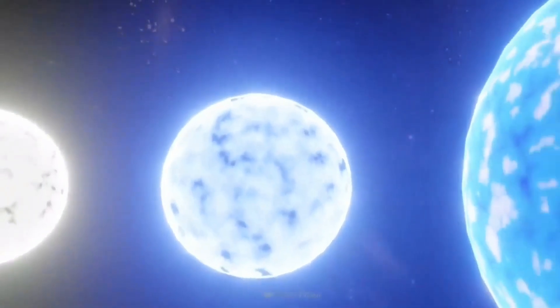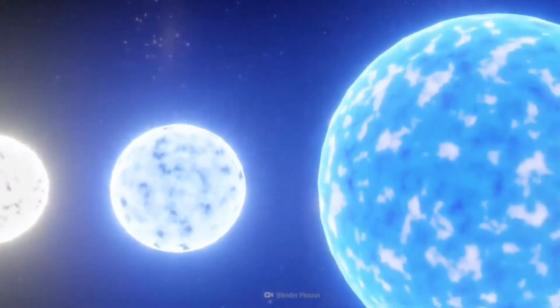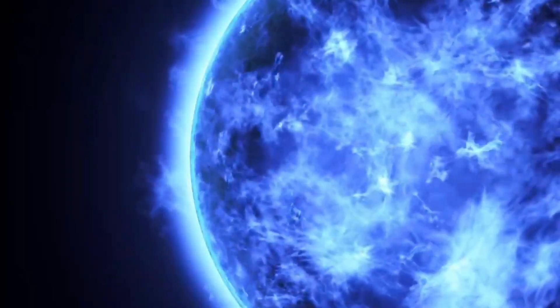The Earth, being the third planet from the sun, would experience the most significant changes. The increased heat and radiation from the blue sun would cause the Earth's atmosphere to expand and thin out.